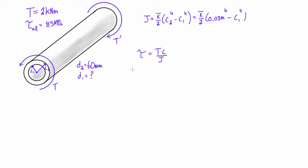So we can fill in everything else here. We have 85 megapascals is equal to that internal torque, so we got two kilonewton meters times c, which in this case is our c2, the distance to the outer surface from the axis of the shaft, so we got 0.03 meters. And this is all going to be over J, so we get pi over two, what we had up here, 0.03 meters to the power of four minus c1 to the power of four.